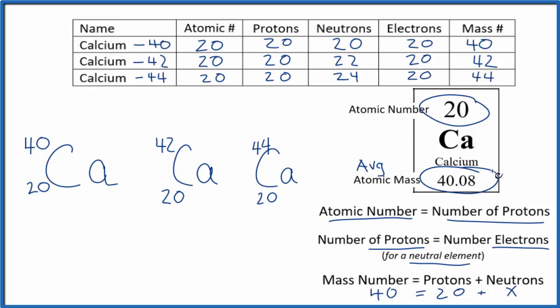The periodic table gives you the notation that's an average. It gives you the average atomic mass for all of the isotopes based on their abundance, how much we have of each type. Because it's closer to 40, that means most of them are going to be 40.